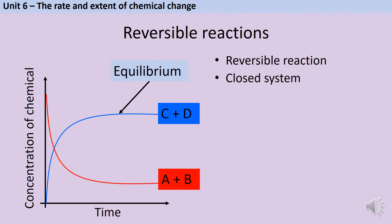It's kind of unfortunate that you usually meet equilibrium in biology before chemistry. In biology, we tend to be talking about diffusion, which is one very specific example of equilibrium, where at the point of equilibrium the concentrations on both sides are going to be the same as each other. But this is actually incredibly unusual.